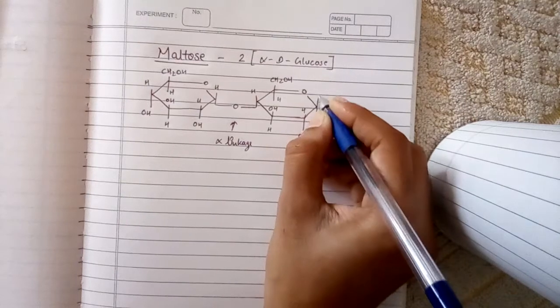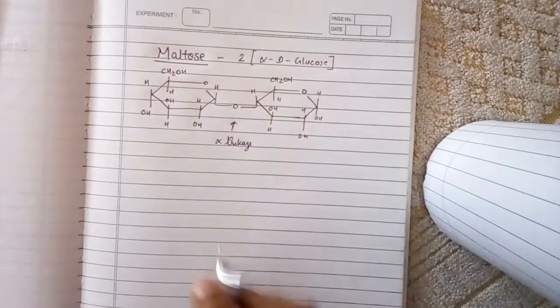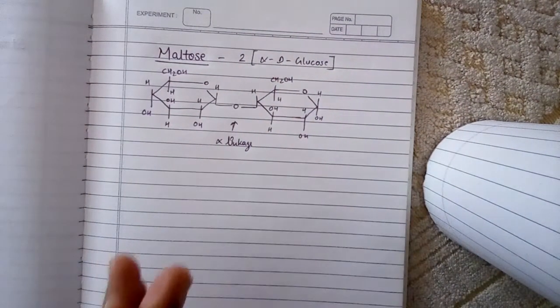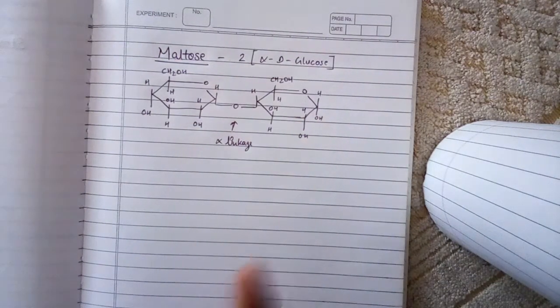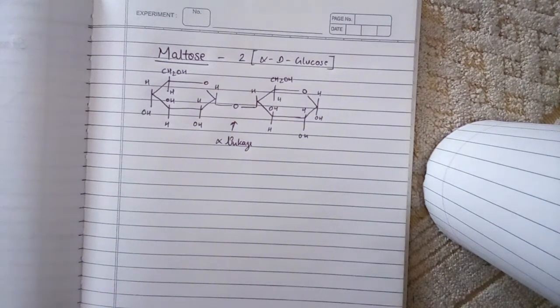And here we have H and OH, same. Okay, this is our maltose made up of two alpha D-glucoses. So that's it, thank you for watching.